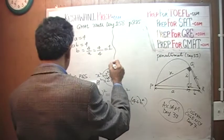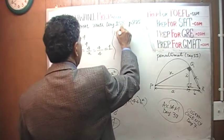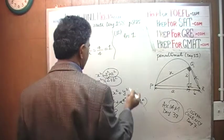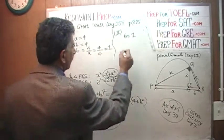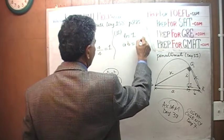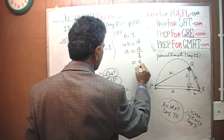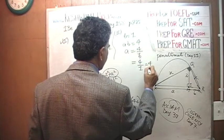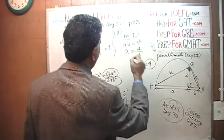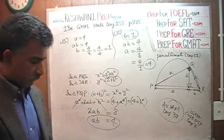Similarly, in the second statement, they tell us that B equals 1. Well, if B equals 1, A times B is 4. Therefore A is 4 over B, which is the same as 4 over 1, which is the same as 4. If A is 4 and B is 1, we can find out the diameter. The second statement is also enough.